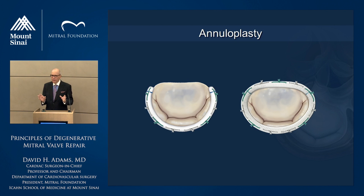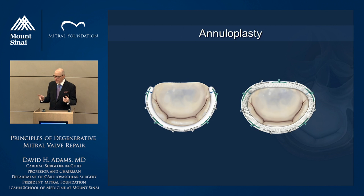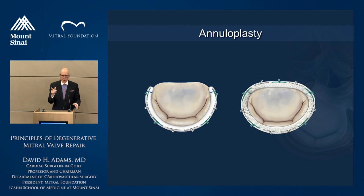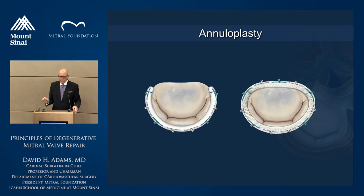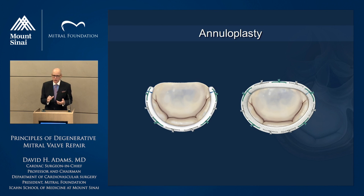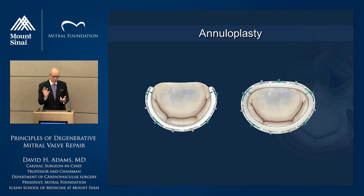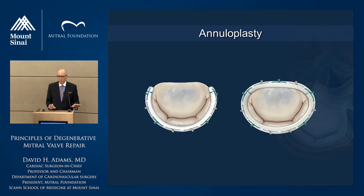There are two main types of annuloplasty. One is posterior reduction — you're reducing the length between commissures or trigones, decreasing septolateral dimension by taking a larger C-shaped annulus and plicating it into a smaller C-shaped ring. A full ring — semi-rigid or rigid — is called a remodeling annuloplasty. Carpentier used the phrase 'remodeling' because it fixes the valve in a systolic position, taking a valve that normally gets smaller when the heart squeezes and fixing it there. It's a more aggressive, fixed reduction of the septolateral dimension.